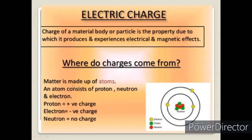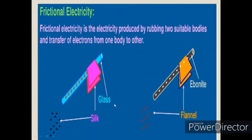To understand where charges come from, we have to look into the microscopic view of an atom. The atom is the fundamental particle — the smallest particle of any matter — and it is made up of proton, neutron, and electron. The atomic structure has a nucleus at the center and electrons revolving around different orbits. The nucleus has protons and neutrons. Proton is positively charged, neutron has no charge, and electrons revolving around the nucleus have negative charge.